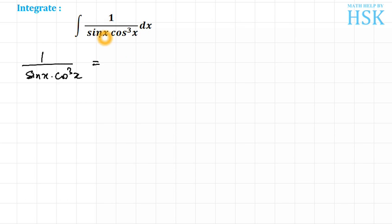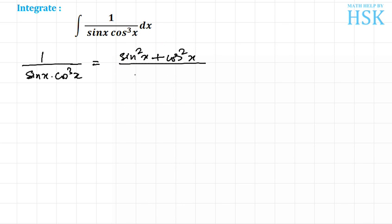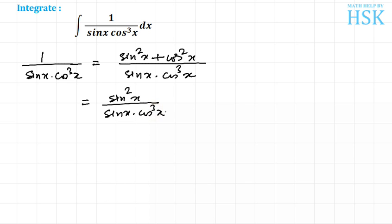To convert this term into one which can be integrated, I am going to write 1 as sin square x plus cos square x, using the identity sin²a + cos²a = 1. So dividing individually, I get sin square x upon sin x into cos cube x plus cos square x upon sin x into cos cube x.